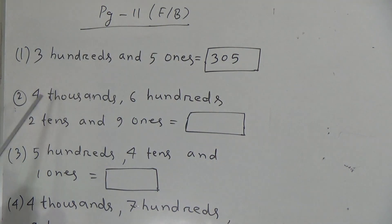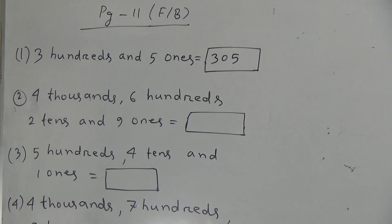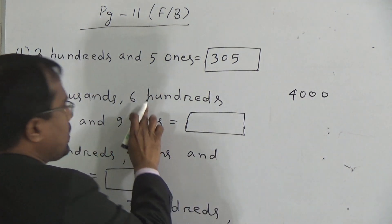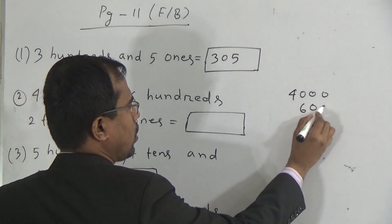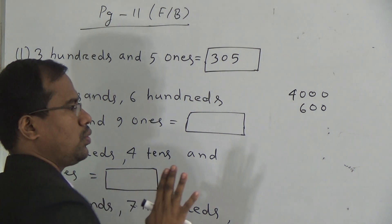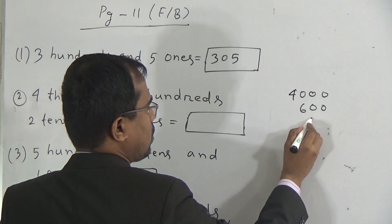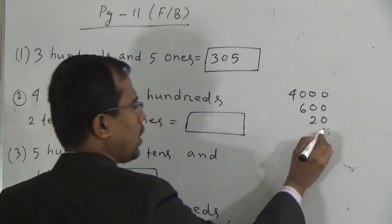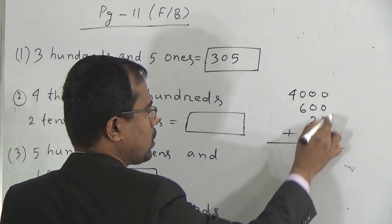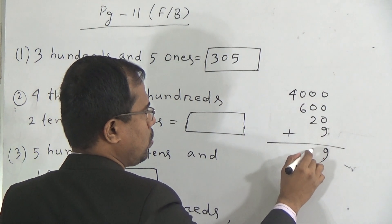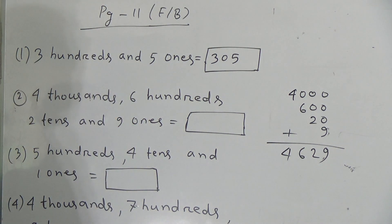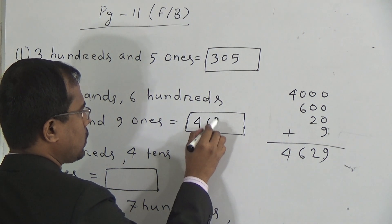Now question 2: 4000, 600, 2 tens and 9 ones is equal to what? 4000 means 4, 0, 0, 0. Then 600. Then 2 tens means 2 × 10 = 20. And 9 ones means 9 × 1 = 9. If we add the numbers: ones column 0+0+0+9 = 9, tens column 0+0+2+0 = 2, hundreds column 0+6+0+0 = 6, thousands column 4. That means the answer of question 2 will be 4629.